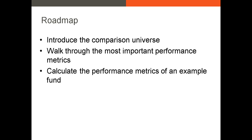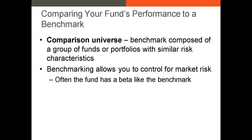Finally, I'll go through a more detailed example where I calculate all of our performance metrics. The simplest and most popular way to assess your fund's relative performance is to compare the portfolio's return with the returns of comparable funds. To do this, you need to determine your fund's comparable universe. The comparable universe is the benchmark composed of a group of funds or portfolios with similar risk characteristics.